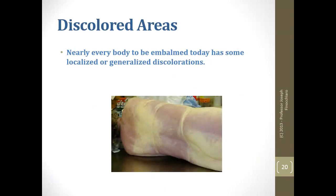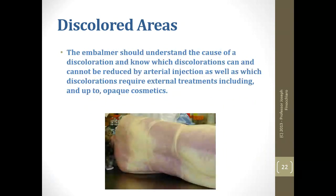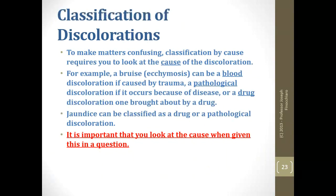Nearly every body we get is going to have some type of discoloration. Changes and deviations from normal skin may require a change in your embalming technique, chemicals, cosmetics, and restoration. You should be able to look at a body and identify any discoloration so you can come up with a treatment for it — and it is something you should discuss at the table so the family knows what they're getting into and what you need to do to fix it.